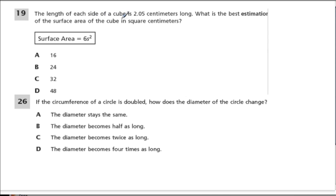So here we have the length of each side of a cube is 2.05 centimeters long. What is the best—keyword estimation—of the surface area of the cube in square centimeters? That means we would estimate each side of the cube as 2. On a cube, we only define a side because they're all the same. Every single side is going to be 2. That's why I have this formula right here: 6s squared.